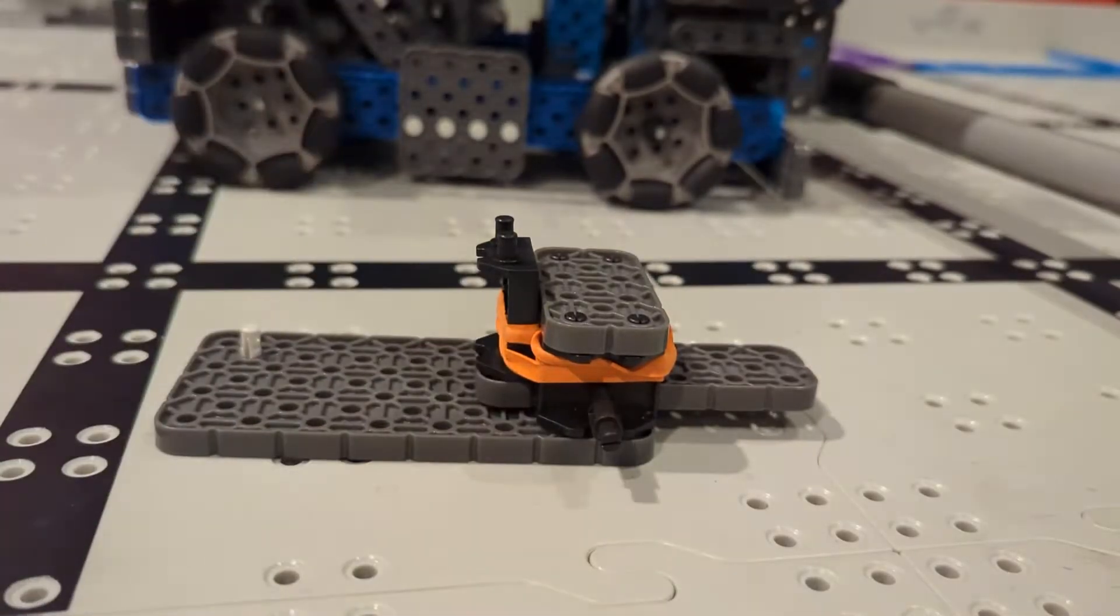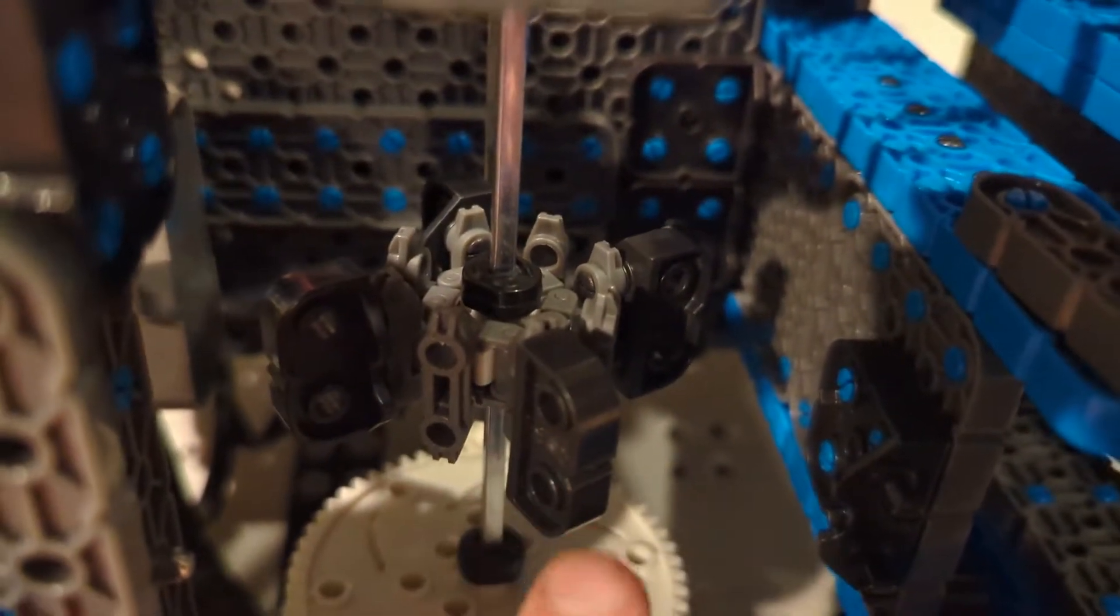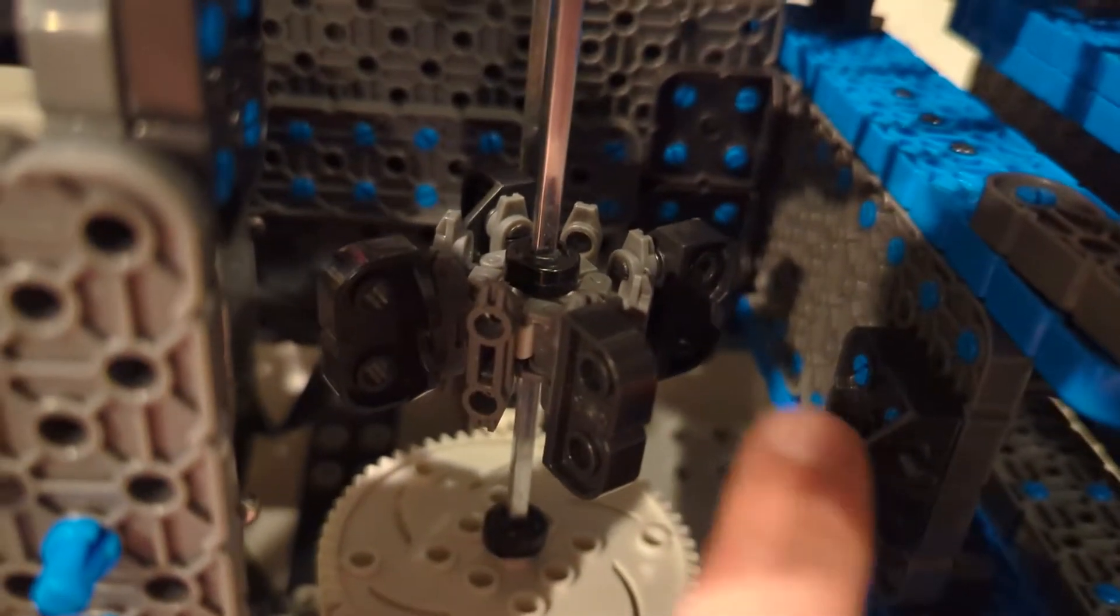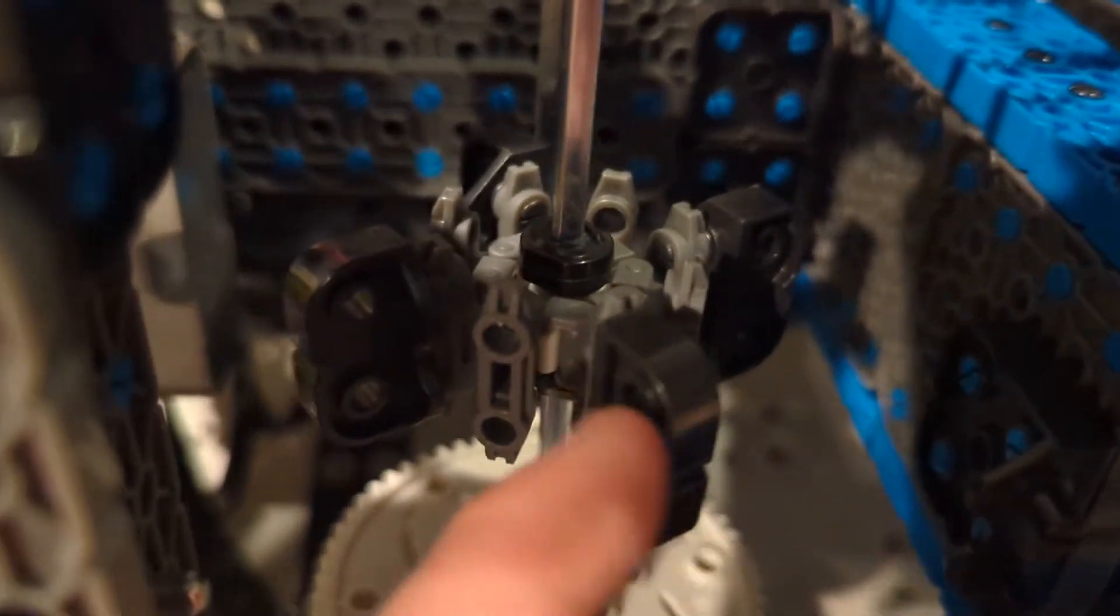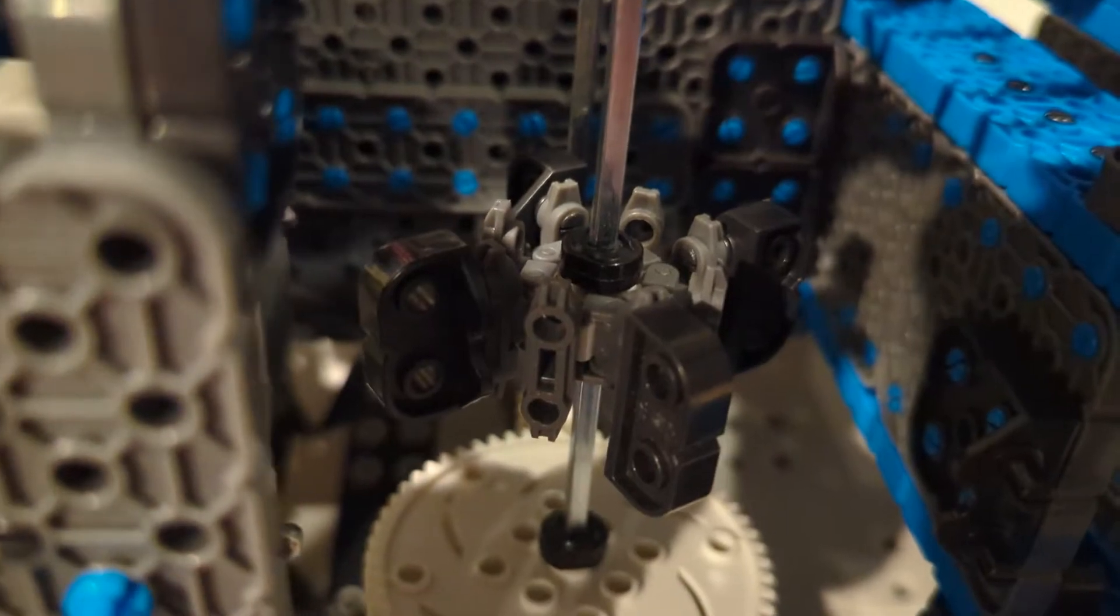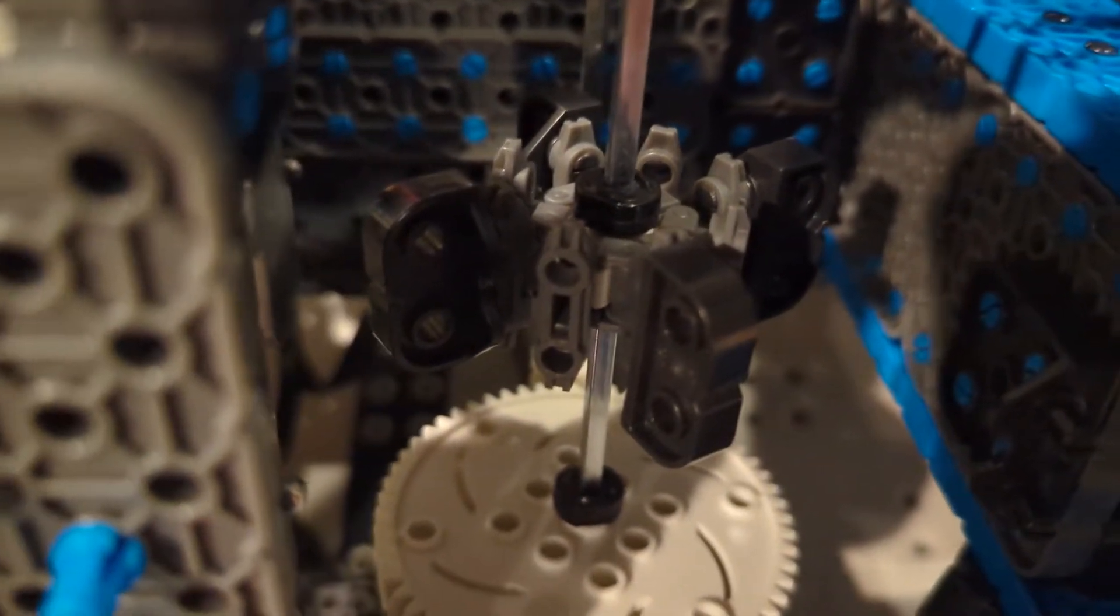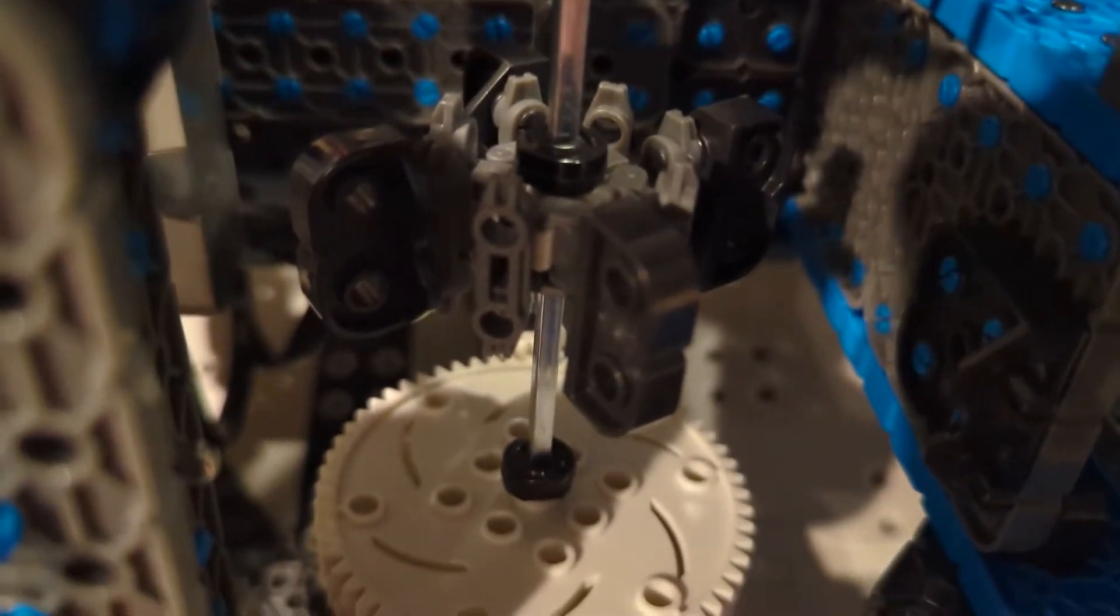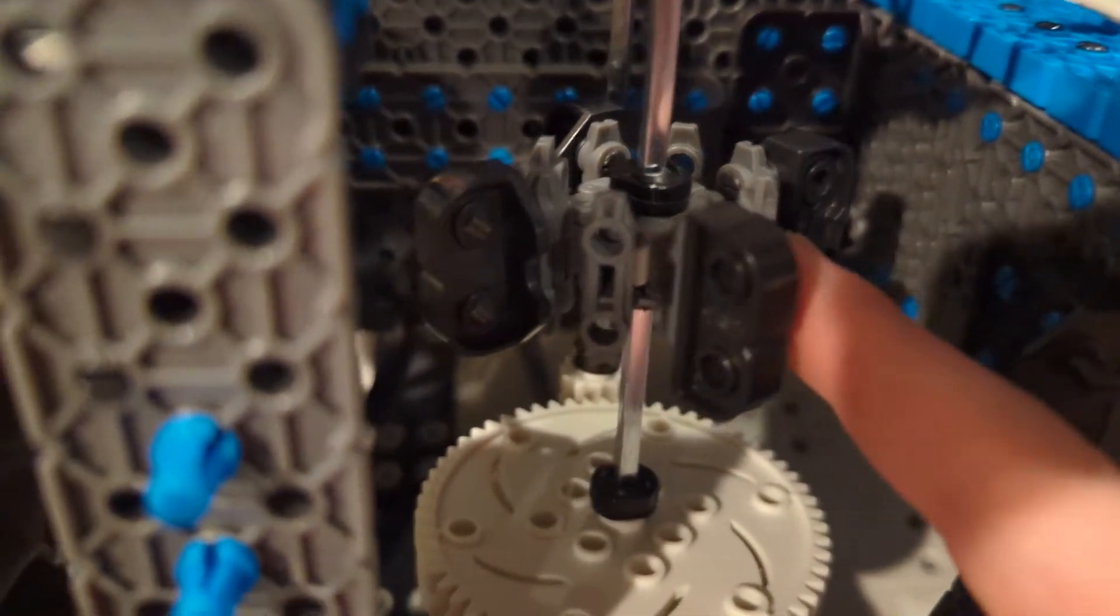So this one solves pretty much all of those problems. Okay, so this part here is the part that pulls back the launcher mechanism, and it does this by having a sprocket gear with a chain around it. We have these extender pieces here that go out and pull back on the launching mechanism, and then they release it, and the pucks get shot out.